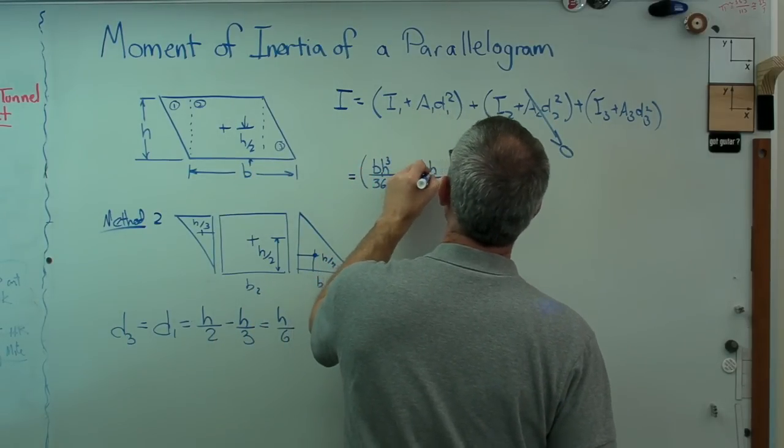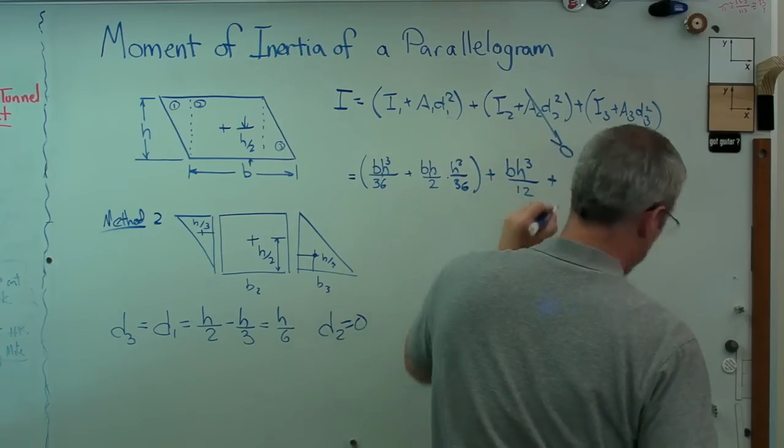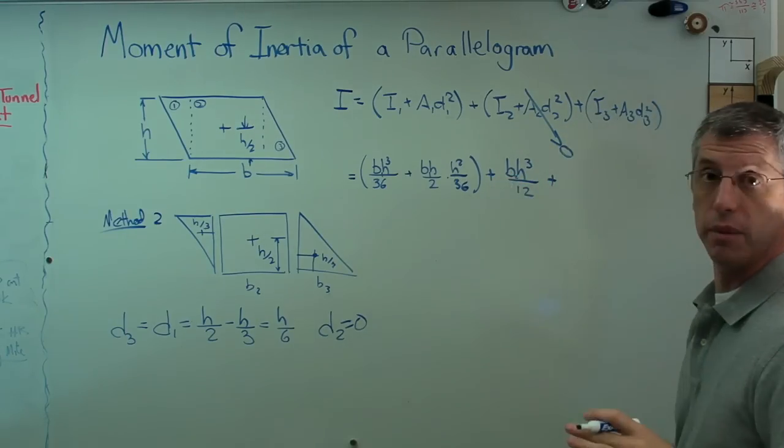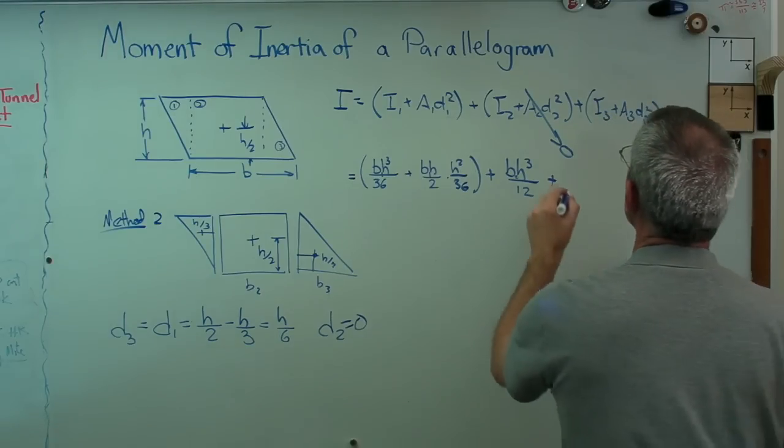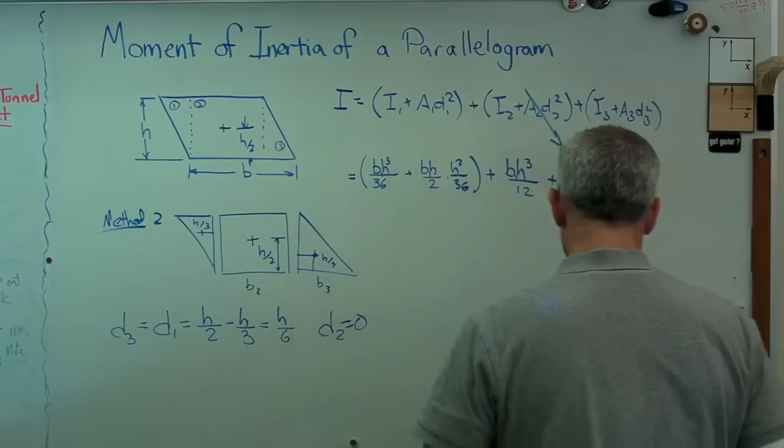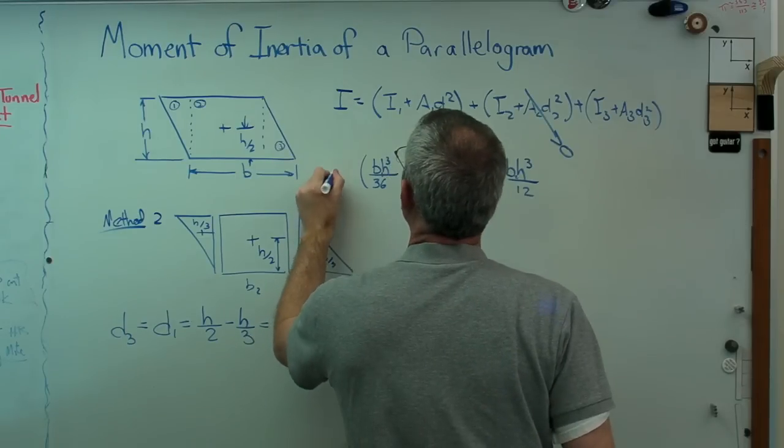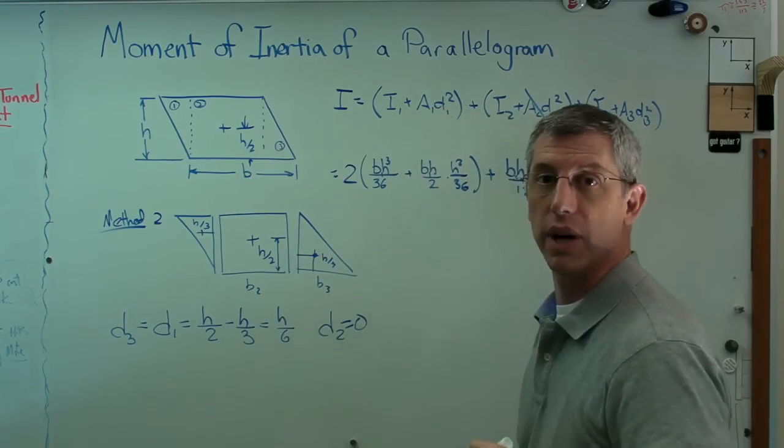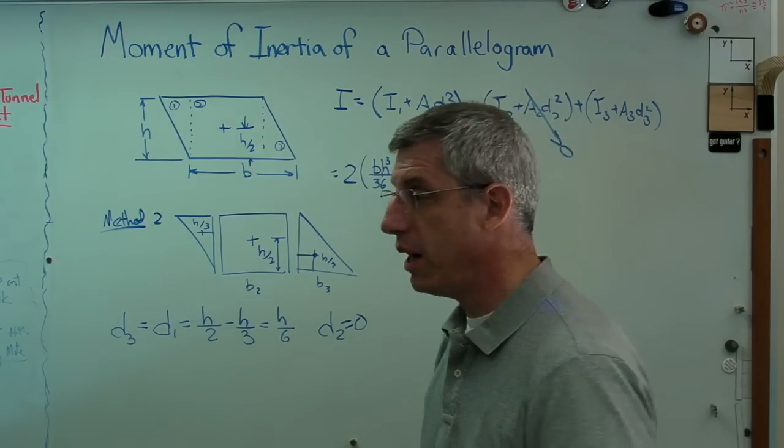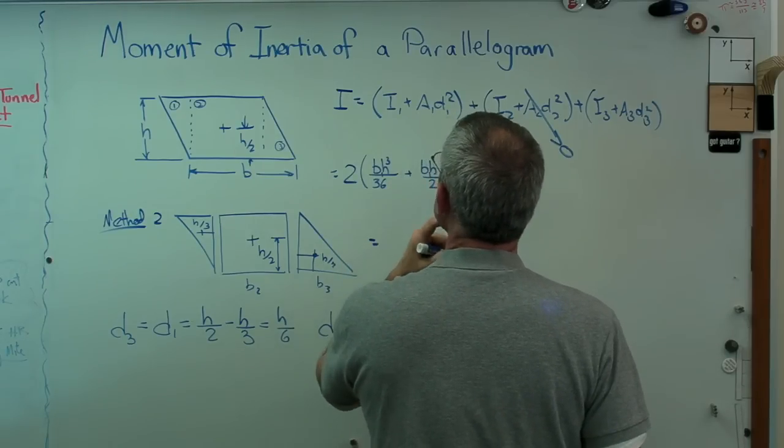There's a 1, okay that's good, bh cubed over 12 plus, and that's h2 right there. This is as much a bookkeeping exercise as it is anything else right now. Notice this term and this term are exactly the same. I'm going to cheat here rather than do that there, even though one of the triangles is upside down and the sign of d might have changed. I'm squaring them, so I don't really need to care what the sign is there.